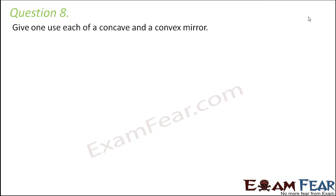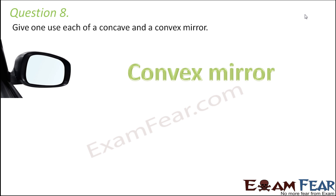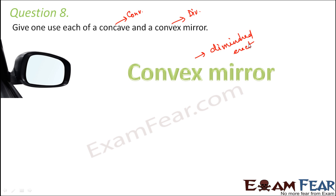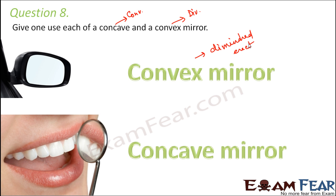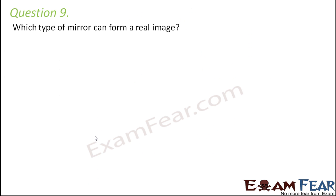Question number eight: Give one use each of a concave and a convex mirror. A concave mirror is a converging mirror and a convex mirror is a diverging mirror. Convex mirrors are used as rear-view mirrors in cars because they produce diminished, erect images. Concave mirrors are used as dentist mirrors because we need enlarged images — keeping the mirror very close to the object produces enlarged, erect images.